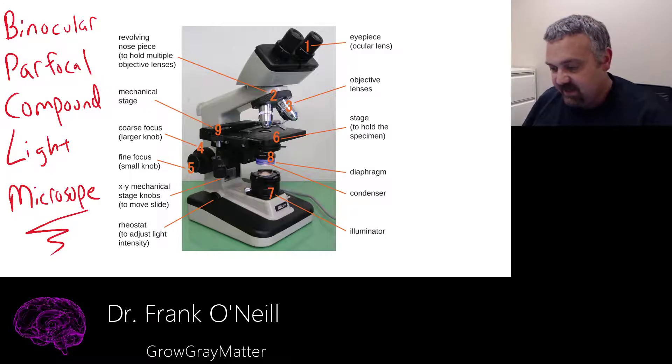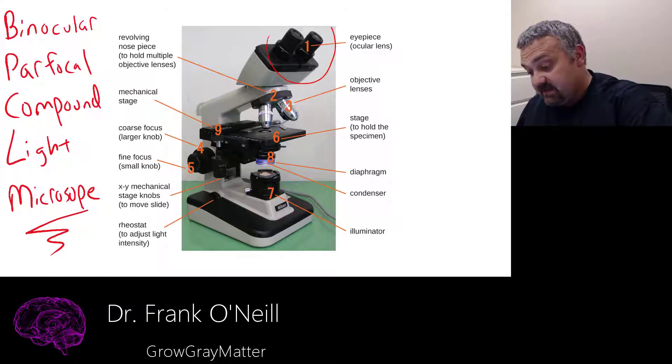This is, as I've written on the left-hand side here, a binocular parfocal compound light microscope. Binocular just tells us that we have the two eyepieces. Traditionally, microscopes only had a single one.